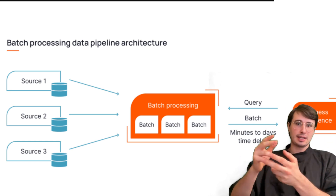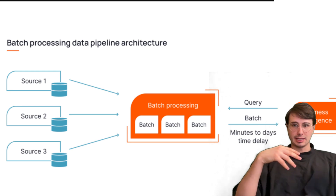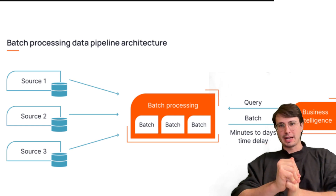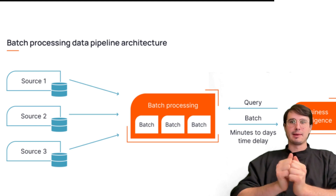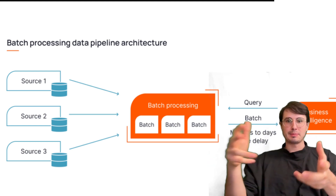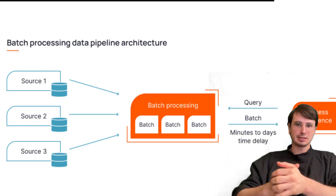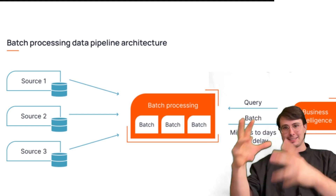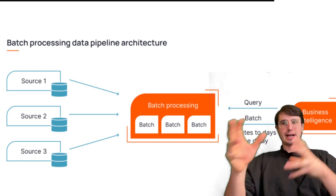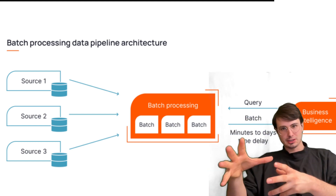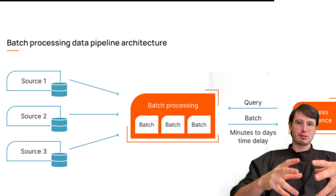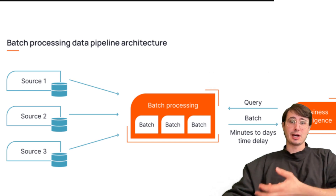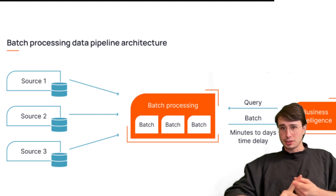An example response would be: I would design a pipeline with a cloud-based data lake such as Amazon S3 or Azure Data Lake as central storage. I would use tools like Apache Spark to handle batch processing for transformations and aggregations. For orchestration, I'd use Apache Airflow to manage dependencies and schedule workflows across disparate systems. Finally, processed data would be loaded into a data warehouse like Snowflake for analytics and business intelligence.